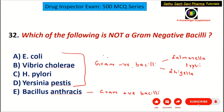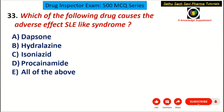Bacillus anthracis is a gram positive bacillus. So the answer to 'which is NOT a gram negative bacillus' is Bacillus anthracis — choice E.